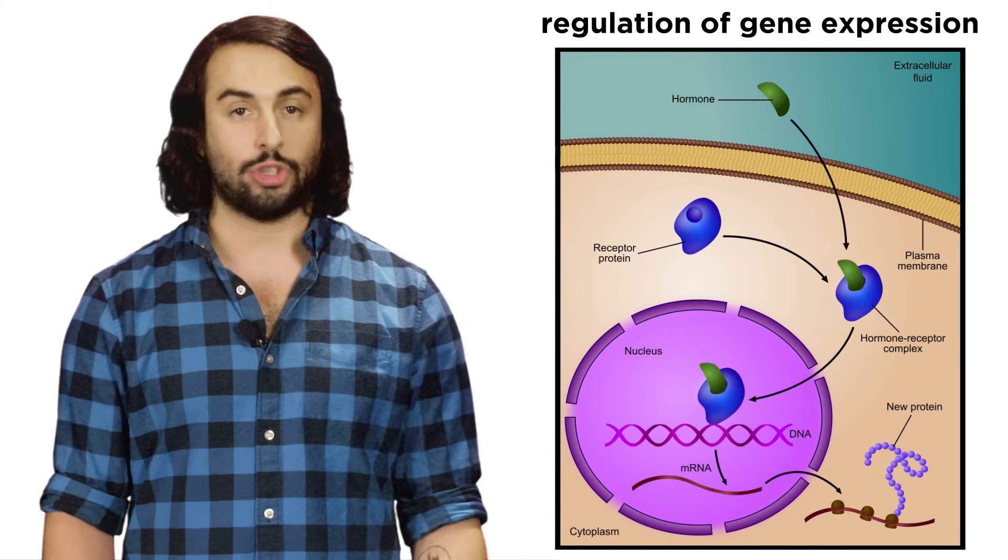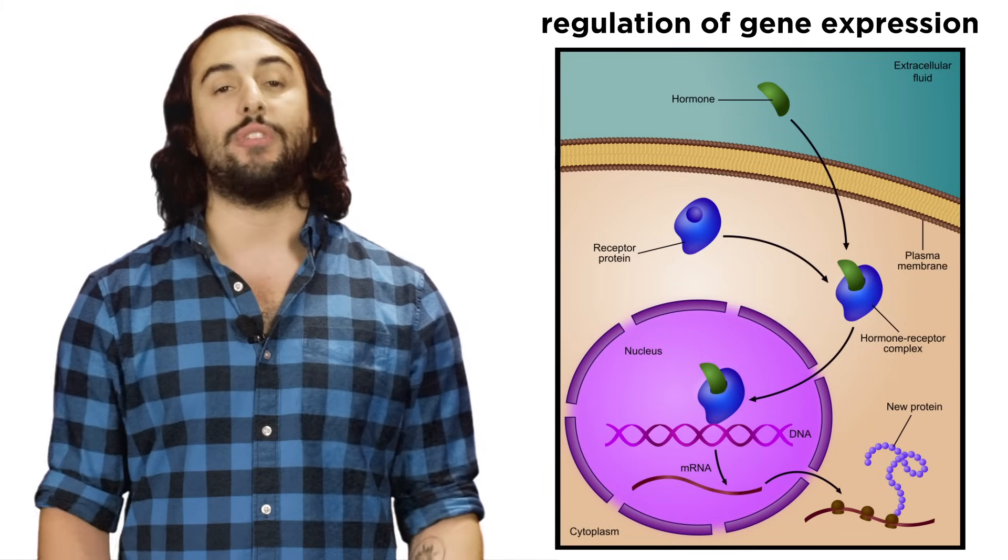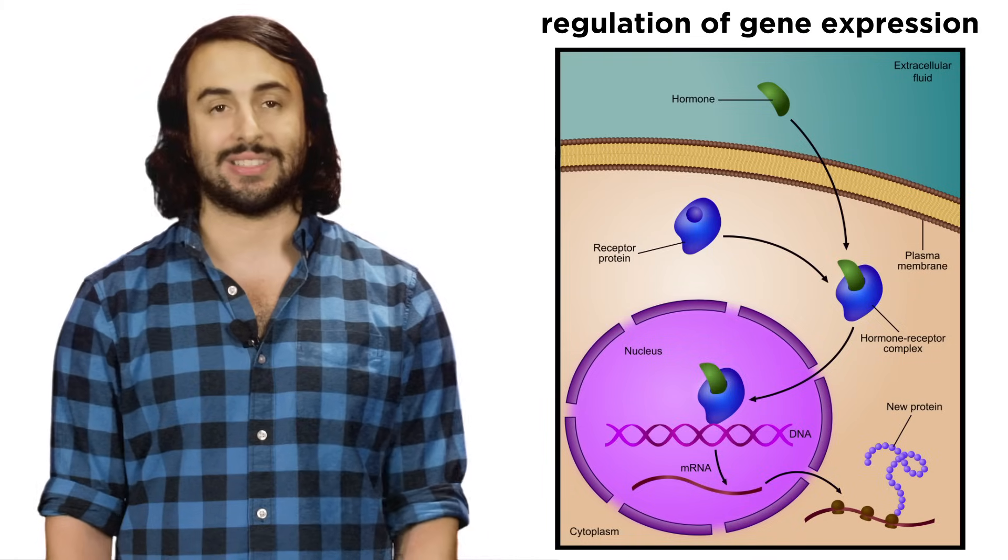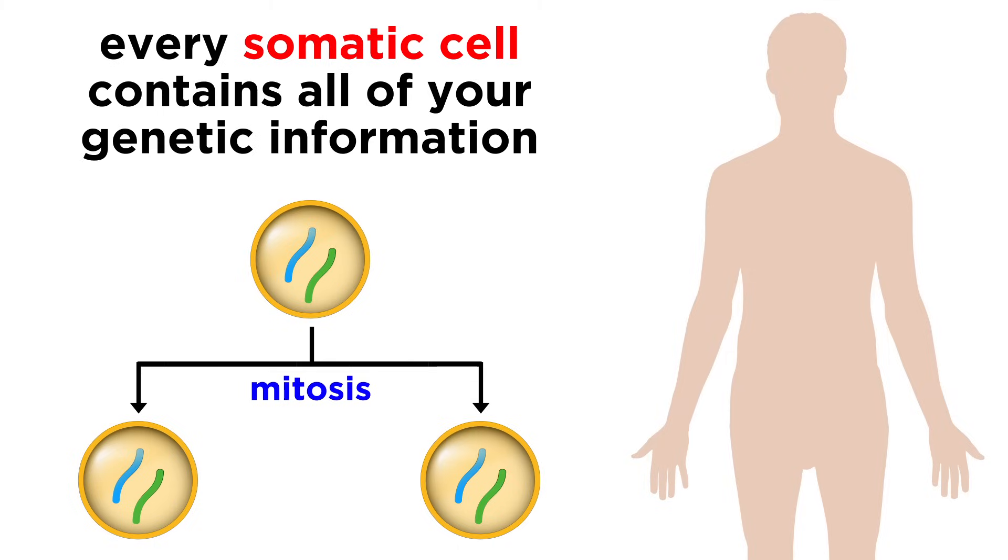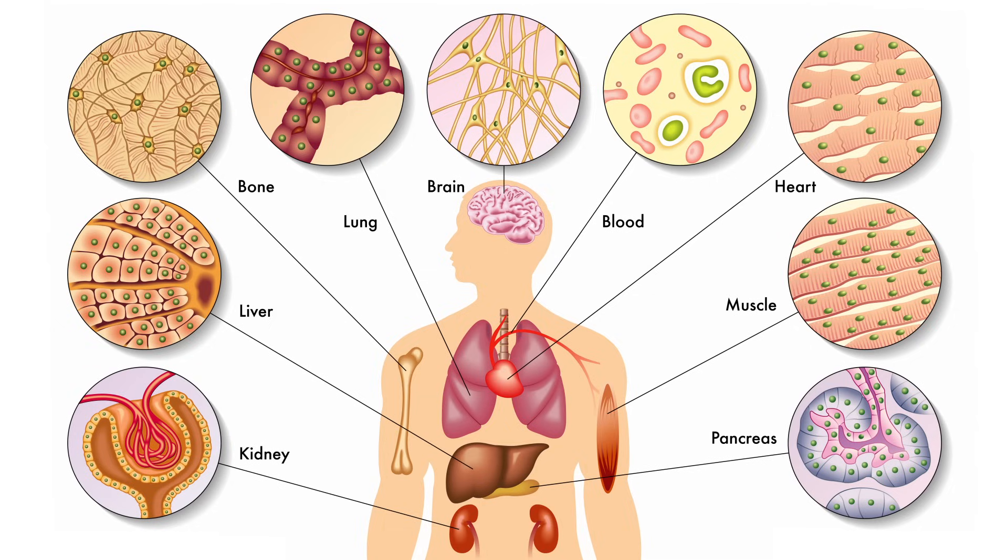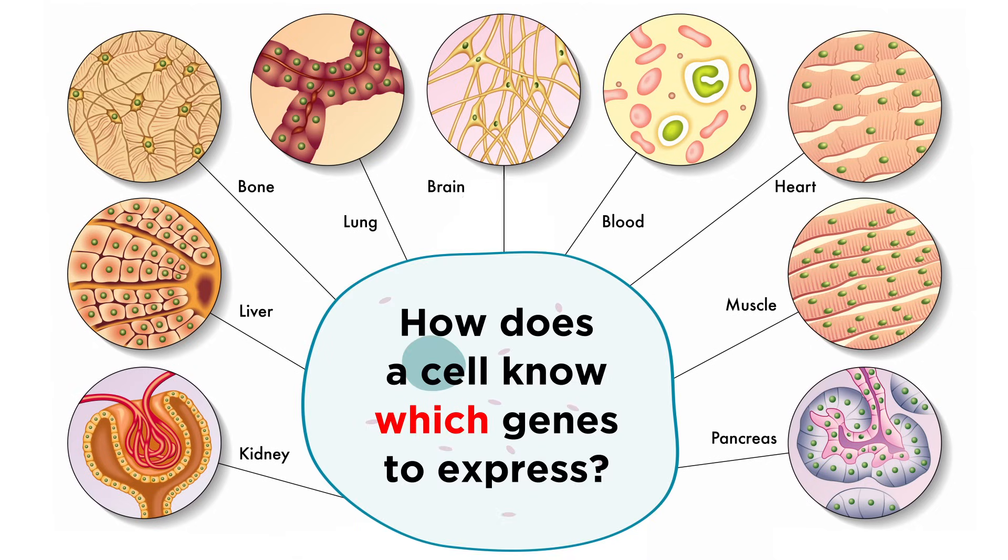Once those processes are understood, we can begin to analyze all of the complex interactions that regulate gene expression. We know from learning about mitosis that every cell in your body, except your gametes, contains all of your genetic information, and therefore all of your genes. But different cells in your body serve different purposes. Some are muscle cells, some are nerve cells, some are liver cells, so different cells need to express different genes. How does a cell know which genes to express and which to leave dormant, so that it can serve its particular purpose?